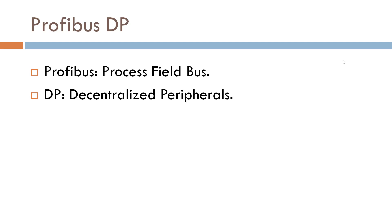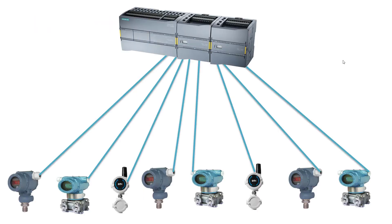Think of it like this: we have a PLC and the PLC is connected to field instruments, as you can see here. The PLC is sharing data. If you want to share data directly from instruments to the PLC, you would have to connect wires to the I/O modules one by one. But if we have hundreds of instruments and we want to connect all of them, how difficult would that be — having hundreds of cables going to the PLC?